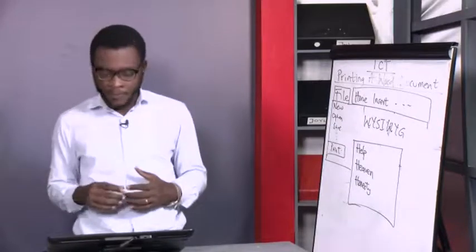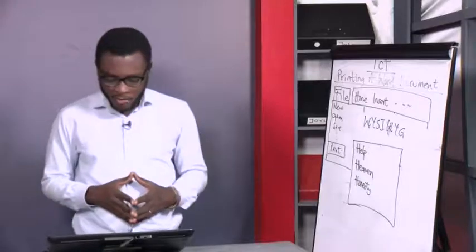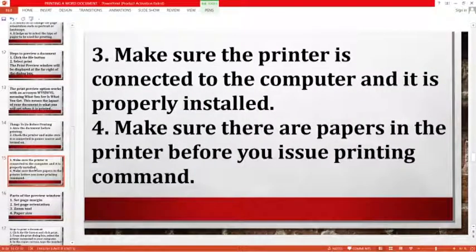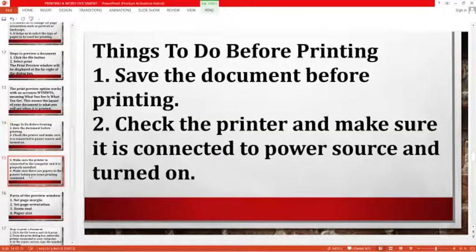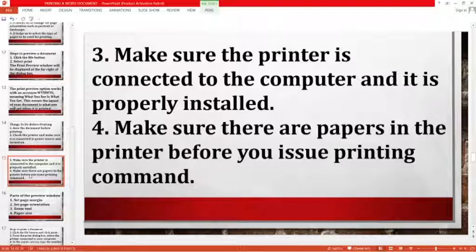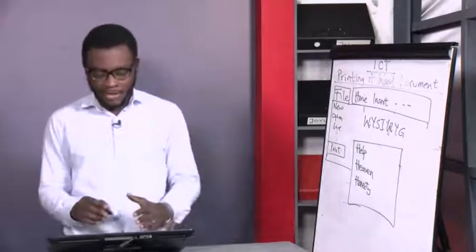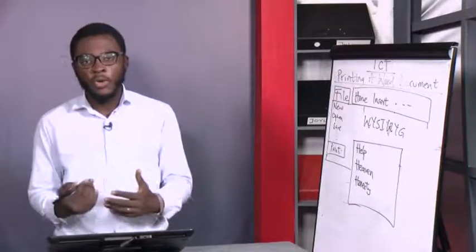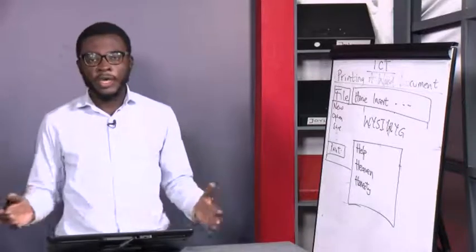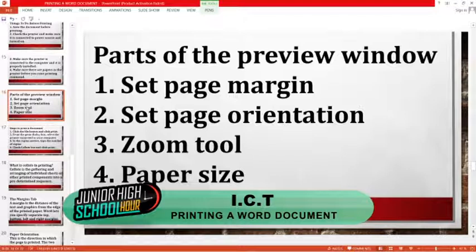Make sure there are papers in the printer before you issue your printing command. After confirming all those things, you are ready to go. The print preview window has several parts: set page margin to help you set the margins, set page orientation to choose your preferred orientation, the zoom tool to increase the screen for better view so you can edit, and the paper size options including A4, A3, and others.